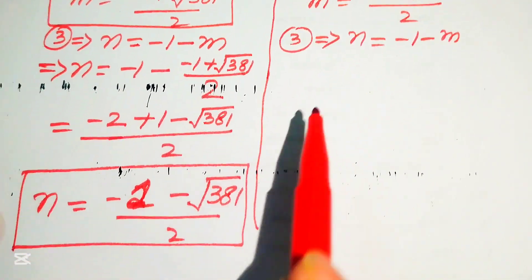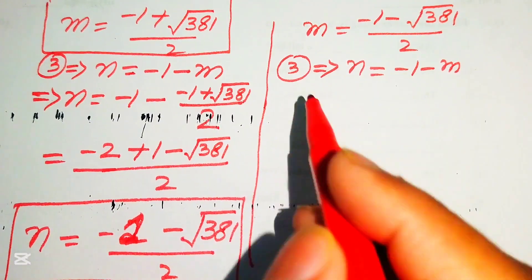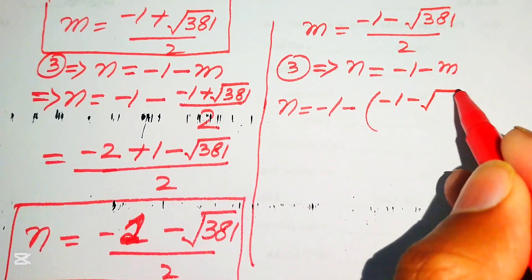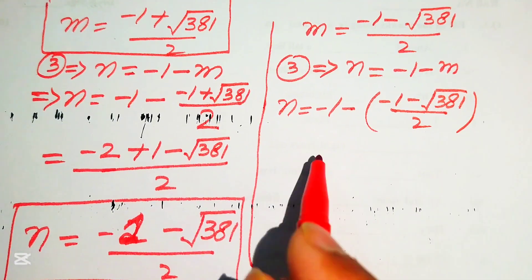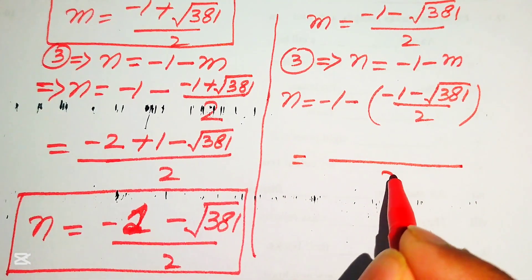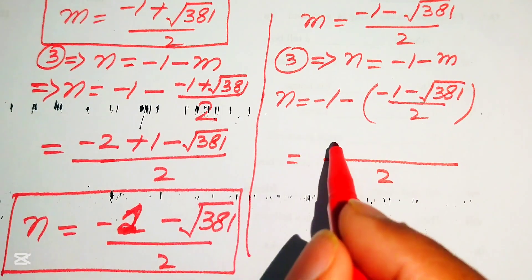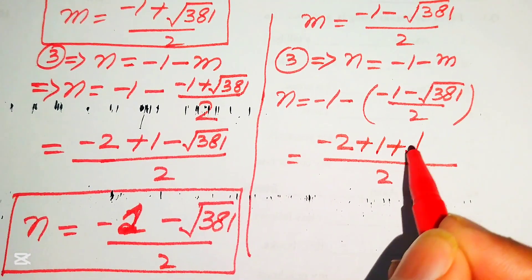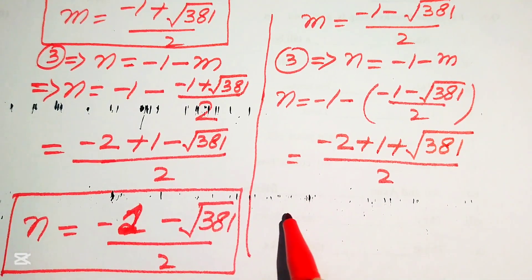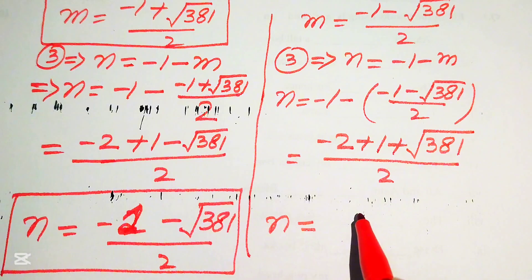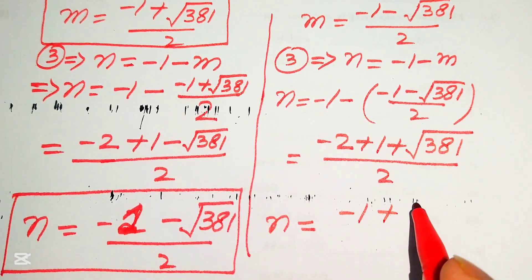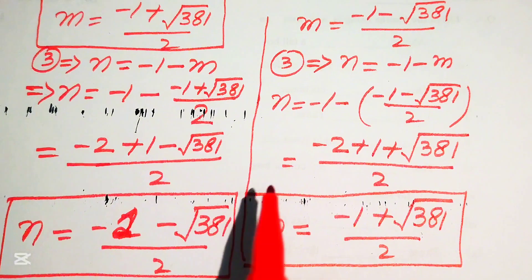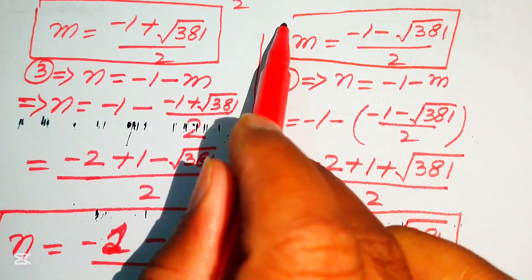For the second case, substituting m = (-1 - √381) / 2 into n = -1 - m: taking LCM of 2, we get n = (-2 + 1 + √381) / 2 = (-1 + √381) / 2.